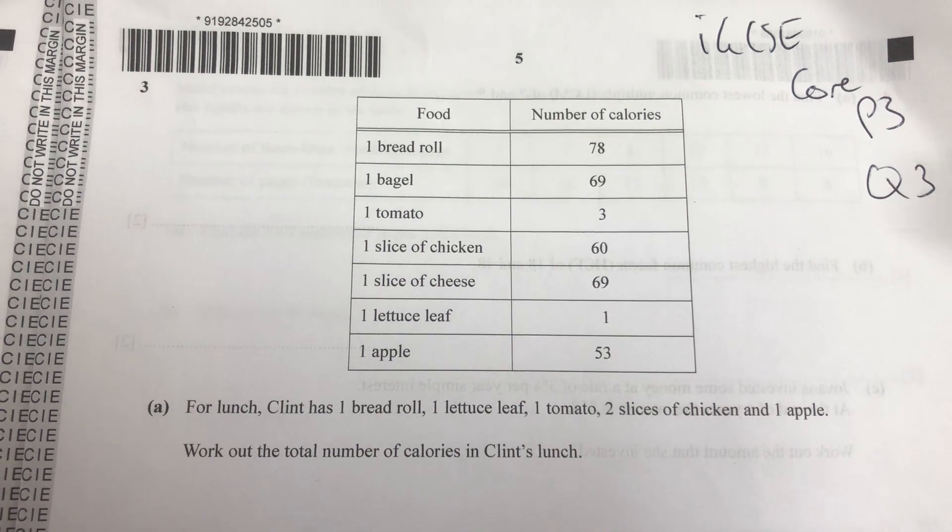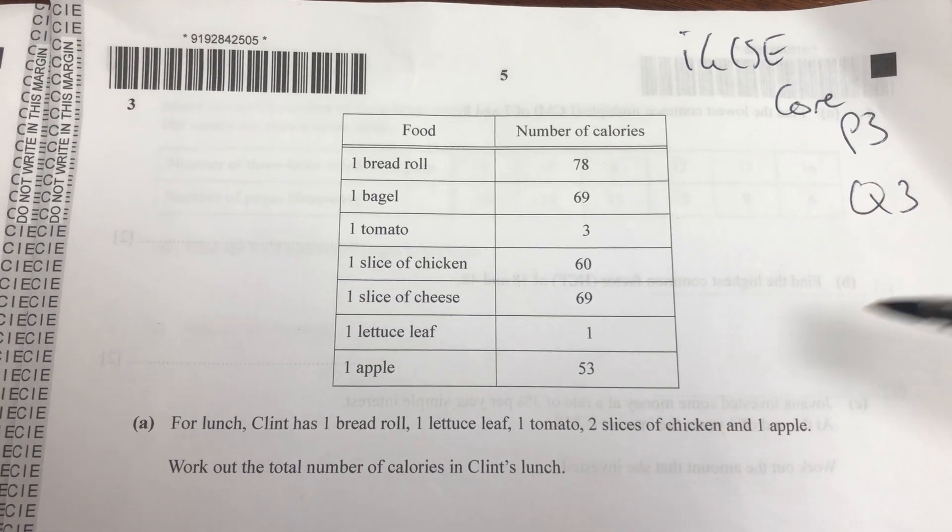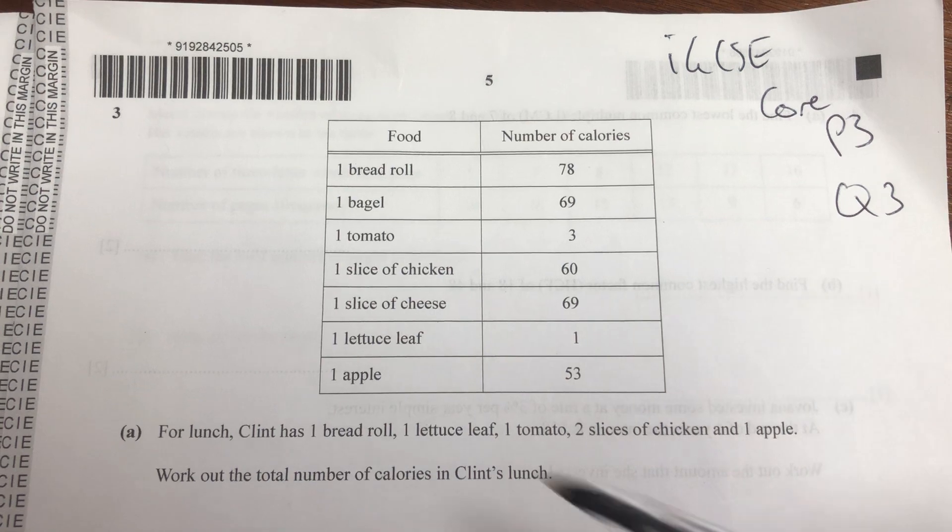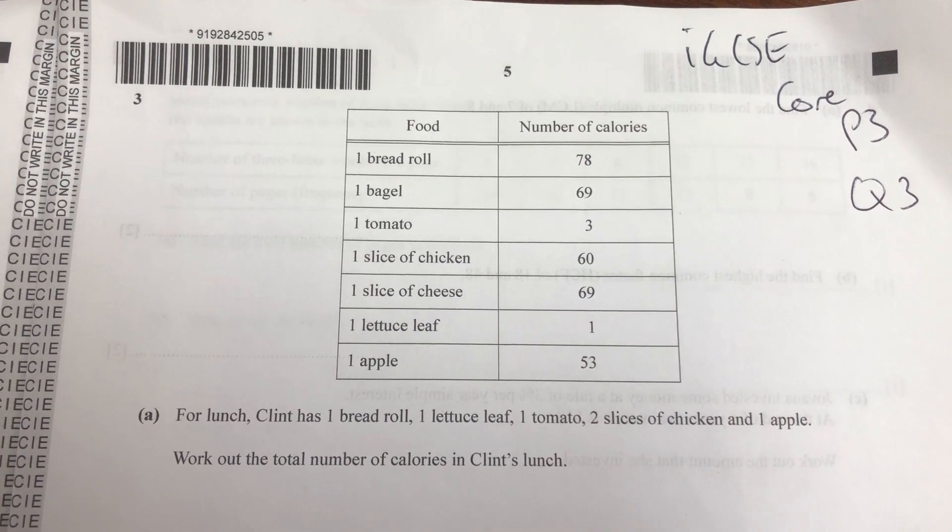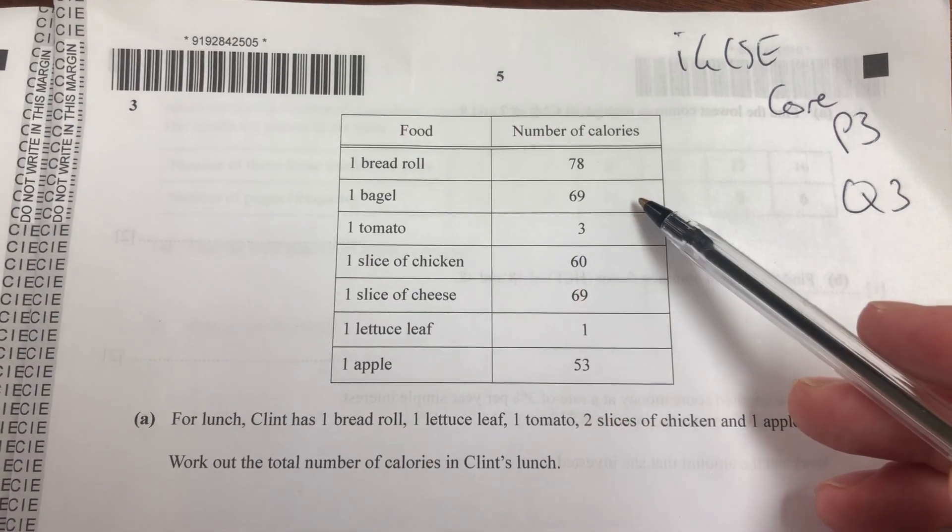So we have a list of food and their calories that this person, Clint, is going to eat and we've got to work out the total number of calories in Clint's lunch. So bread roll is 78, bagel 69 and so forth.